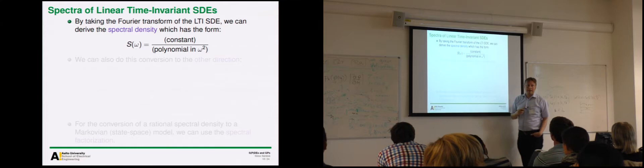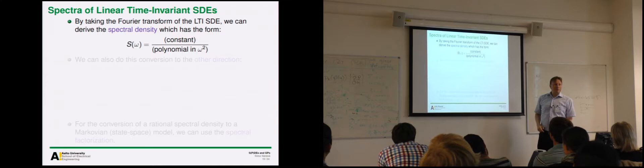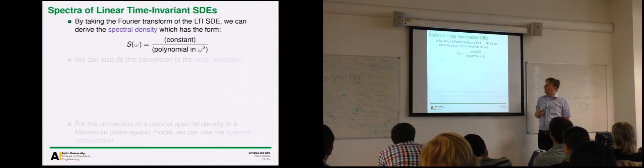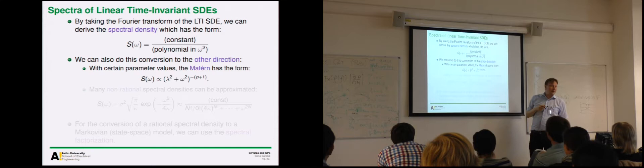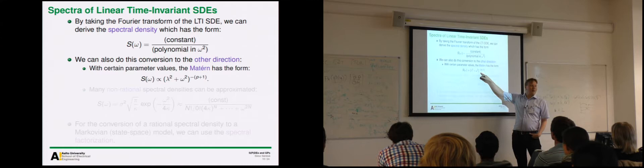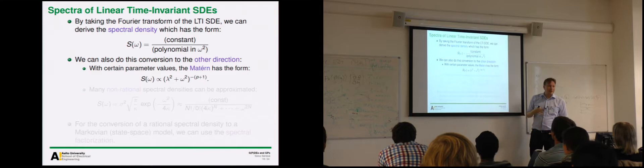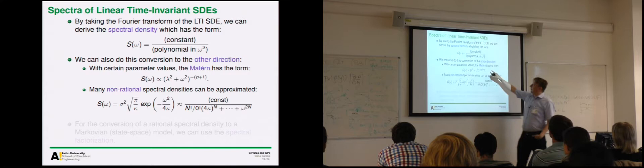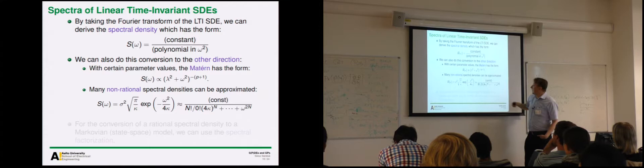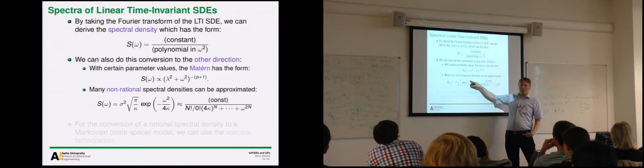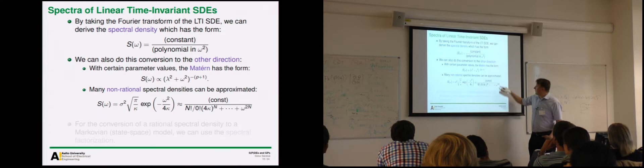The spectral density looked like a constant over a second-order polynomial. For a more general differential equation, you always get a constant over a polynomial in ω². All processes with spectral density of this rational form are Markovian, and we can use the Kalman filtering trick. You can even have a polynomial on top and still get that. So if we are lucky enough to have a covariance function with this rational spectral density form, we can do the conversion. The Matern covariance function happens to have this property — it's not a coincidence because Matern originally comes from a differential equation. You can also use Padé approximants to approximate processes like the Gaussian/RBF covariance, which has a Gaussian-shaped spectral density — these are Markovian approximations of non-Markovian Gaussian processes, related to spectral factorization in signal processing.